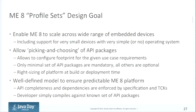On the ME side, we have a similar alignment called profile sets. The idea is to enable Java ME to scale across a wide range of embedded devices — pick and choose what APIs you need. Only a minimal set of API packages are mandatory; the rest are optional. This well-defined model ensures predictability of the Java ME platform. If your application has that information, you know the environment you need to properly run your application.